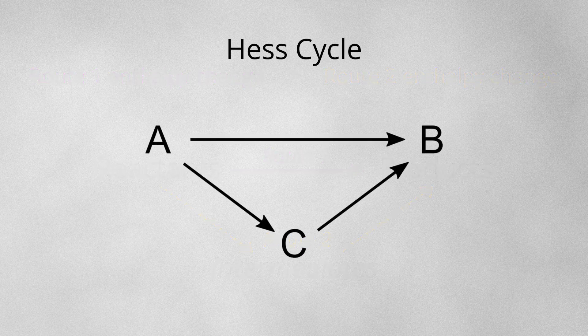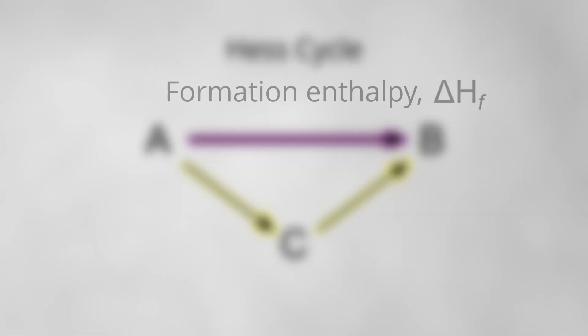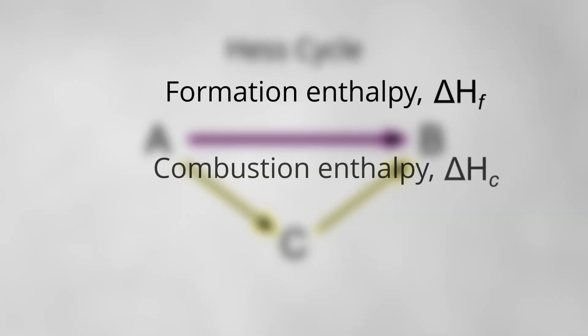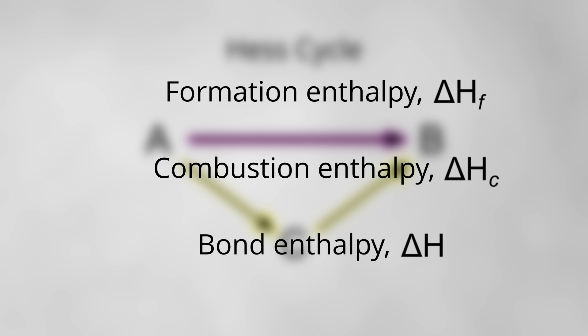A Hess cycle is just a visual representation of Hess' law, and we can use Hess' cycles to work out unknown enthalpy changes. If we know these two enthalpy changes, we can calculate the unknown one, because it doesn't matter how we get there, as long as we start in the same place and finish in the same place overall. Hess' cycles most commonly use either formation enthalpies, combustion enthalpies, or bond enthalpies. Let me show you how they work.